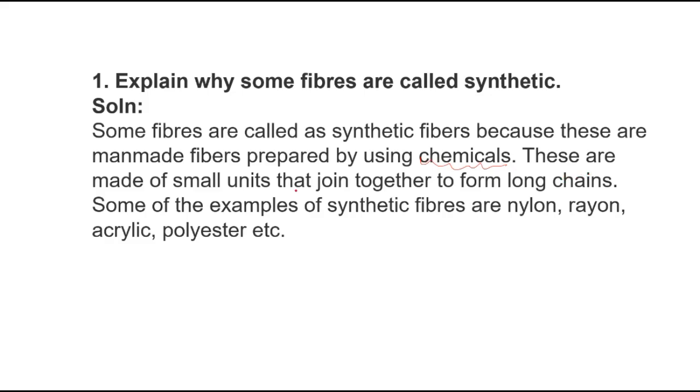We can write the answer this way: Some fibers are called synthetic fibers because they are man-made fibers prepared by using chemicals. These are made of small units - they are actually called monomers. Mono means single, so many monomers combine together and join into a long chain called a polymer. Some examples are nylon, acrylic, polyester, and so on.